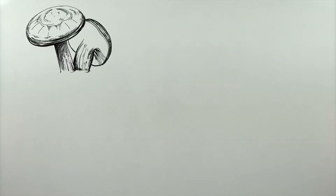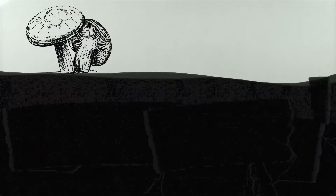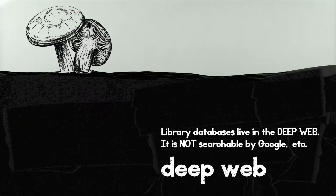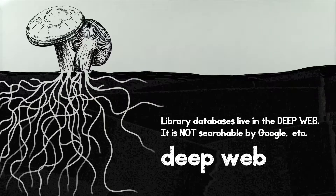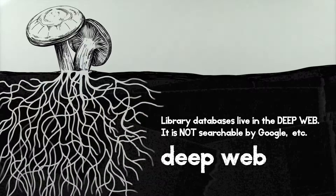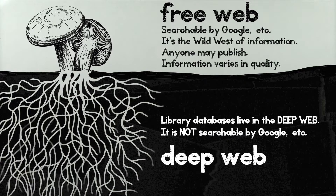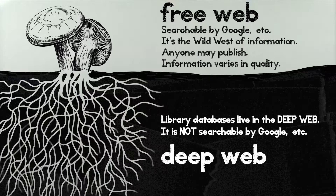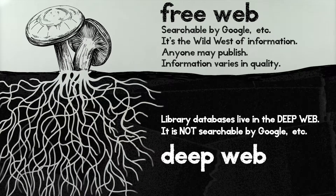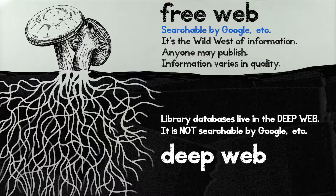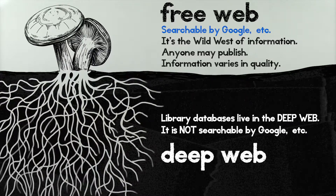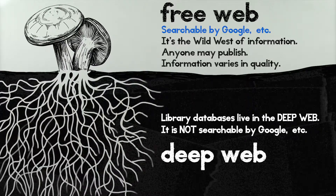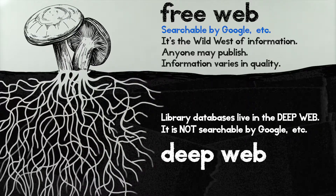The best place to look for reliable information is in Kruger Library's databases. They are chock full of scholarly articles. But the free web, which is what we call the parts of the web that you can access through search engines like Google or DuckDuckGo, isn't exactly devoid of information.